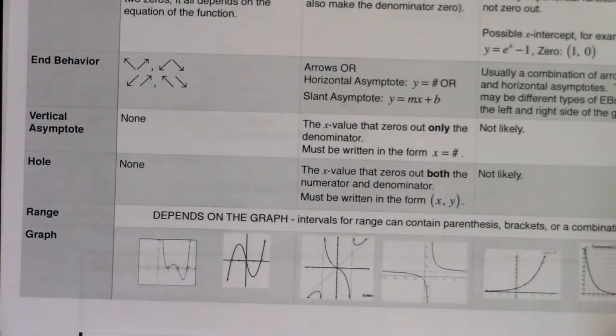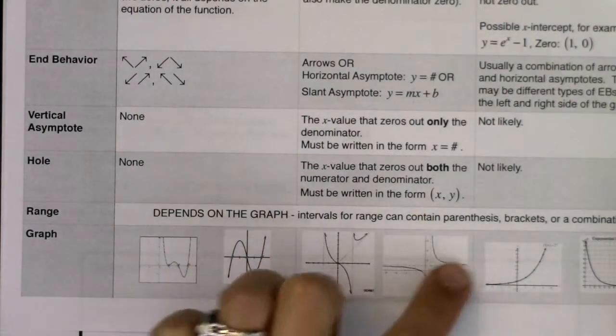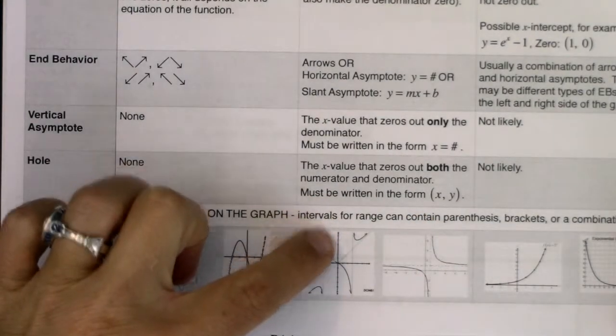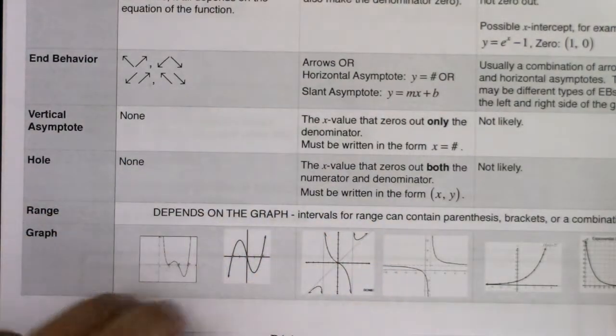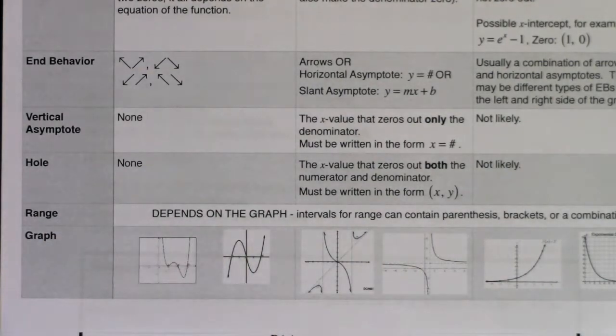And you're going to be graphing these functions for me. Sometimes you'll have just straight vertical and horizontal asymptotes. Sometimes, like here, you'll have a vertical and a slant asymptote. And when you have those slant asymptotes, like we did, I think it was in Example 7, you're going to want to use your calculator to find those max and min points because you might need those for your range.